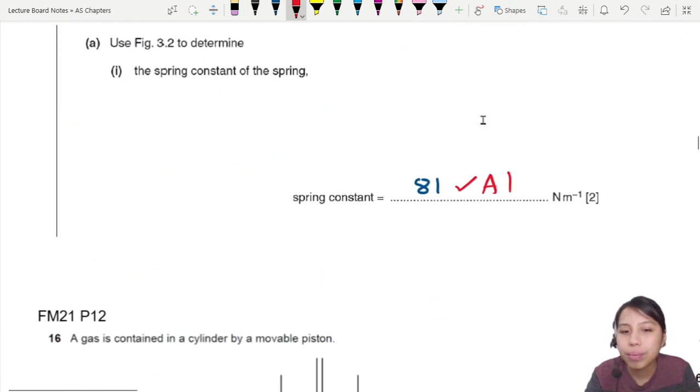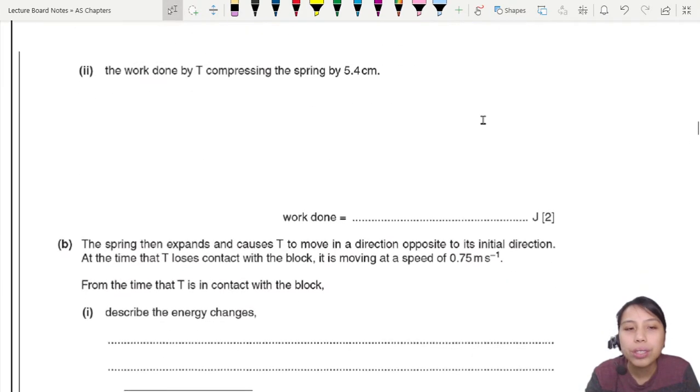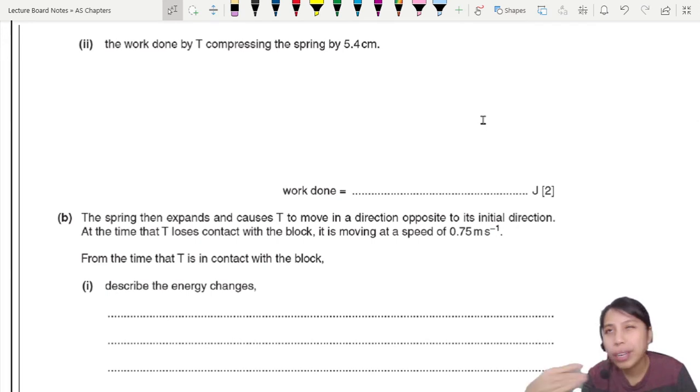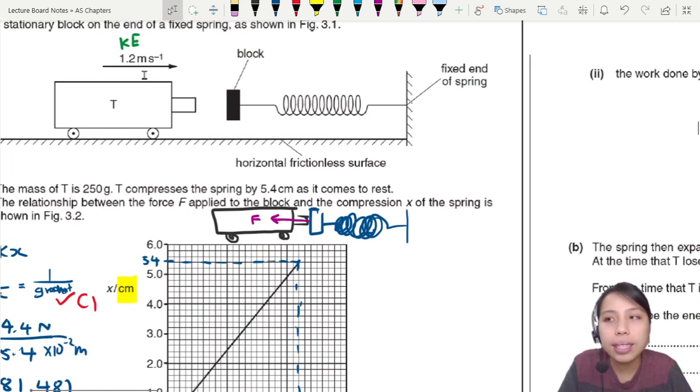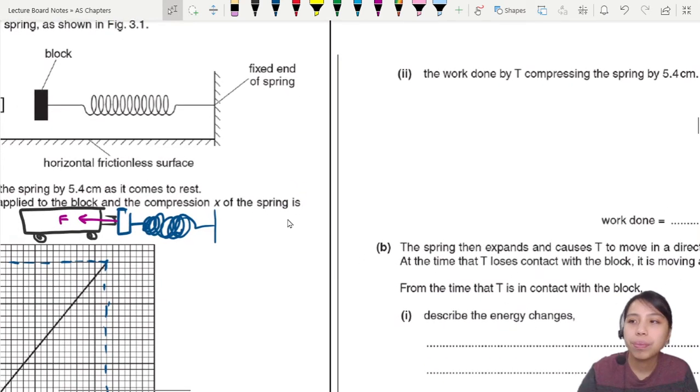What is the work done by T compressing the spring by 5.4 cm? Work done is change in energy. Why is there work done by T? When T comes into contact with the block, it does work on the spring and compresses it. At the same time, the spring is pushing against the block, so there are two work dones here.